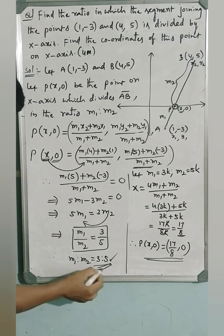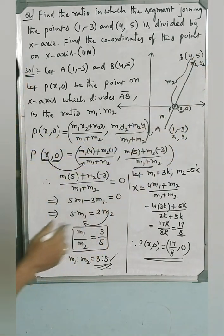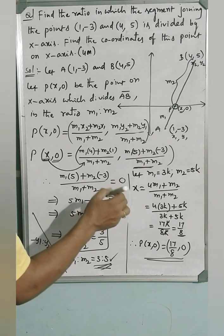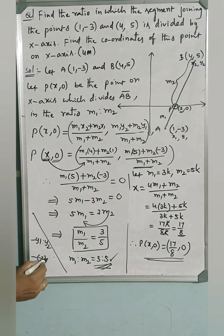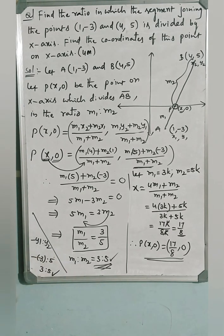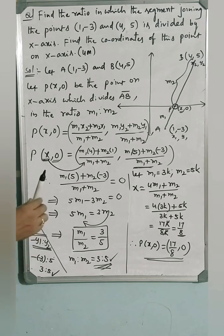There is a simple shortcut to find this ratio. The x-axis divides any segment joining the points in the ratio −y1 : y2. Here, −y1 = −(−3) = 3 and y2 = 5, so the ratio is 3 : 5 — which is what we got. Similarly, the y-axis divides a segment in the ratio −x1 : x2. You may use this shortcut if you are given the same question for a one-mark question. Thank you, I hope you understand.